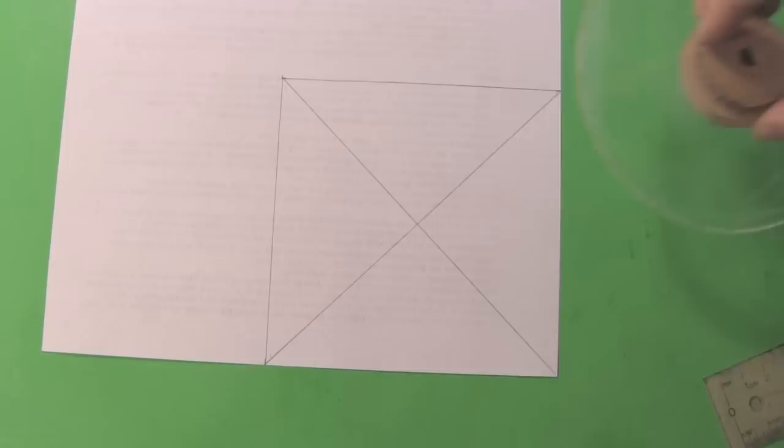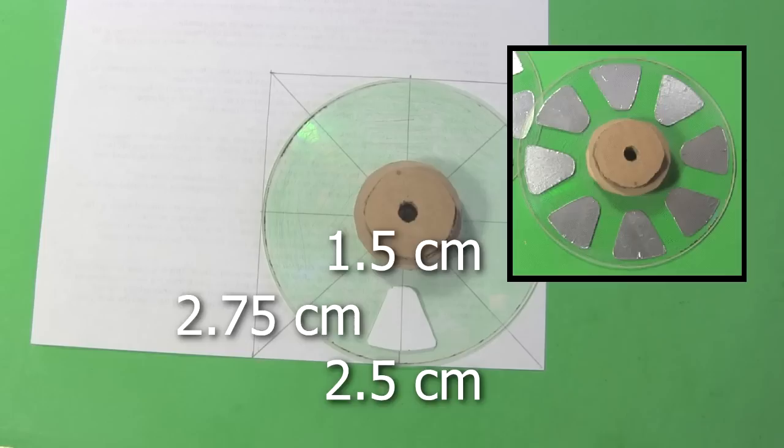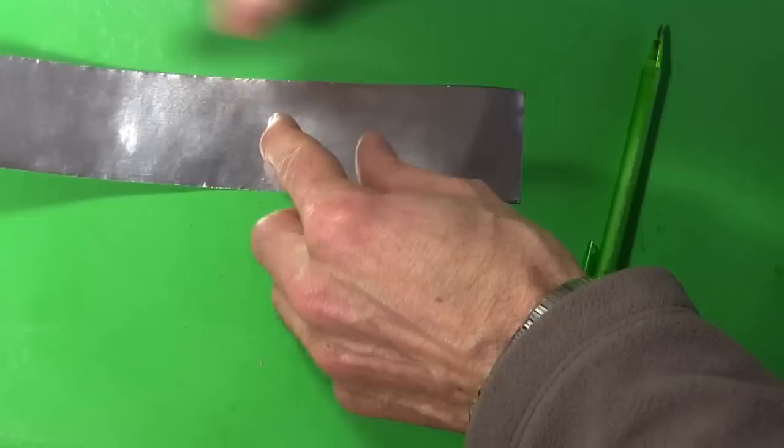To make the sectors, I first draw a square whose sides are the same as the diameter of the CD, and carefully draw eight lines in the square that meet at the center. I then make a paper template of the sectors. I chose these dimensions since they give a big size while still having the sectors well separated from each other. Separating them helps keep the losses down. Then I trace the outlines for 16 sectors on aluminum tape and cut them out.